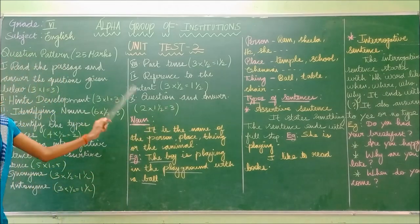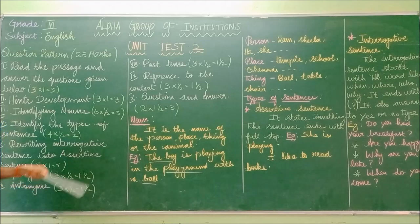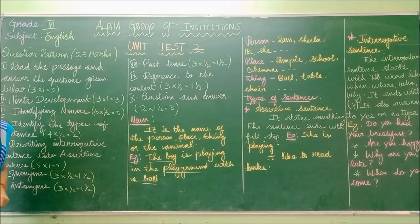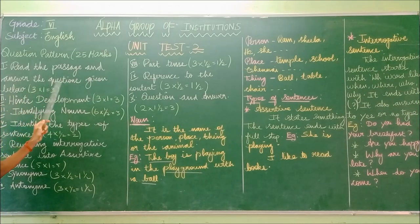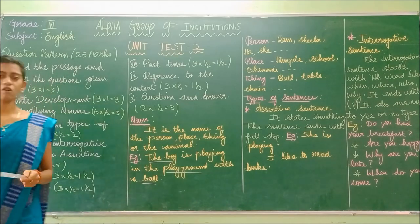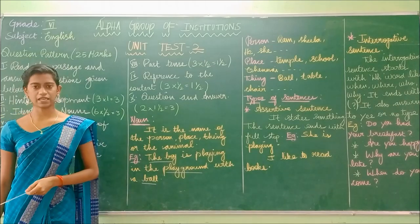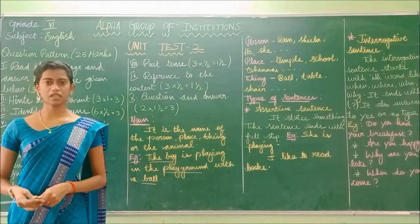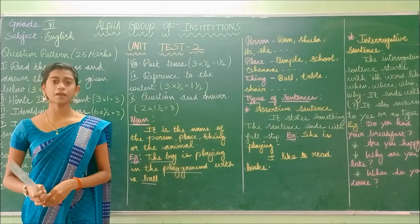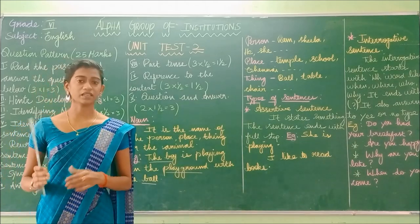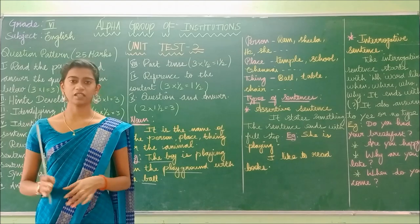So this is the question pattern for your unit test and it carries 25 marks. Now let us discuss each section one by one. The first section is: read the passage and answer the questions given below. A passage will be given to you, and you have to read it and understand its meaning.